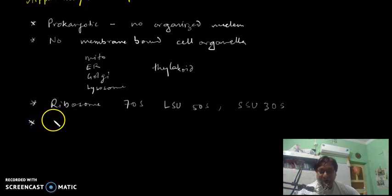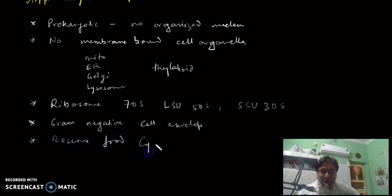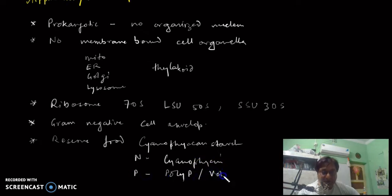As far as the cell wall is concerned, it is a gram-negative cell wall. Mostly gram-negative type of cell envelope is present. If we talk about the reserved food, the reserved food is cyanophycean starch, also called glycogen. The other reserved food, the nitrogen reserved food, is cyanophycin. And there are phosphate reserves also in the form of polyphosphate granules, also called volutin granules.